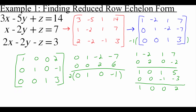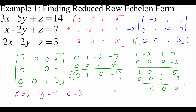Now that we've got this in reduced row echelon form, the answers are standing out to us. The top row — the one is in the x column — tells me x is two. The second row — the one is in the y column — tells me y is negative one. And the bottom row — the one is in the z column — tells me z is three.